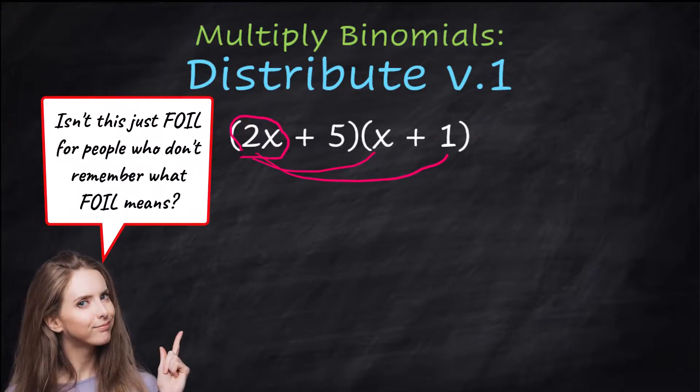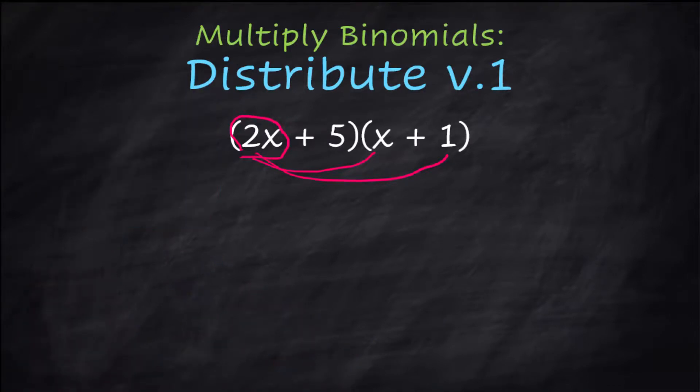So this is going to feel a little bit like FOIL, but if you don't remember what FOIL stands for, you can still do all this. So 2x times x, and then 2x times 1.